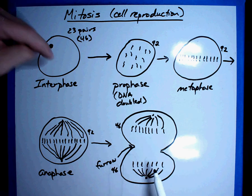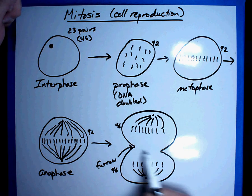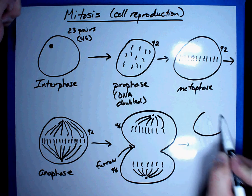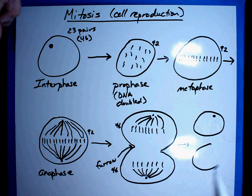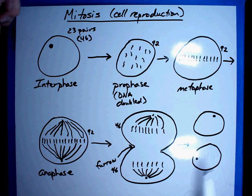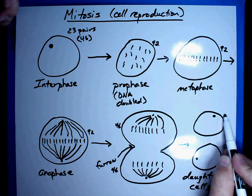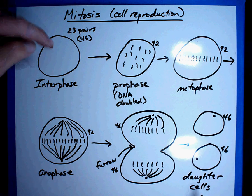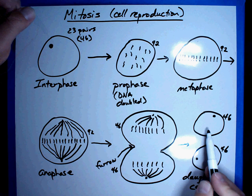And what happens is after that furrow comes all the way together, what you end up having is two cells with a nucleus that is reformed. You have what are called daughter cells that each have 46 chromosomes, normal chromosomes, as the original. That one cell has now made two.